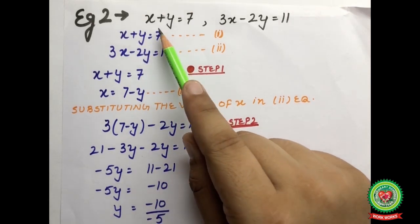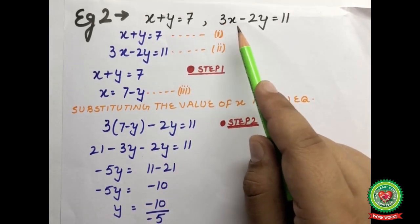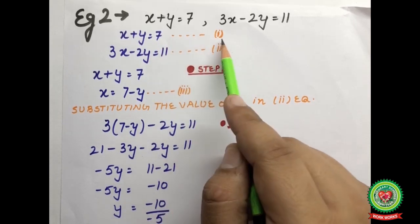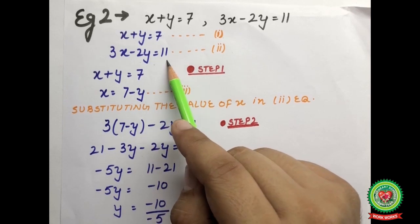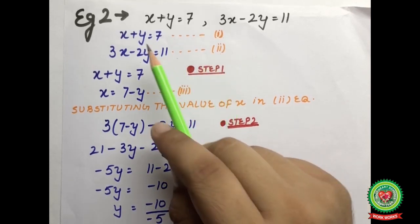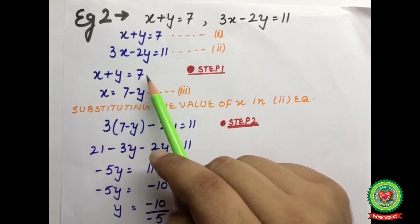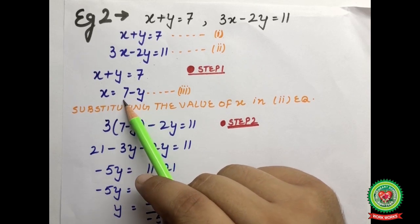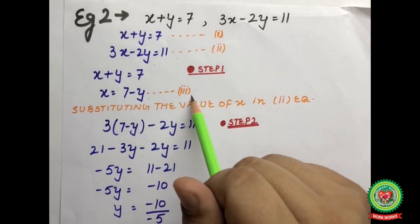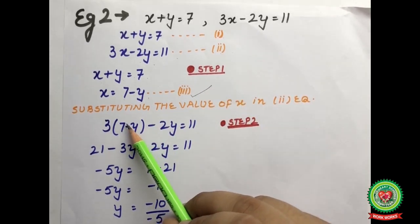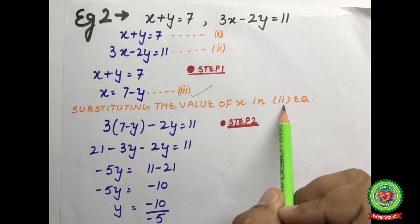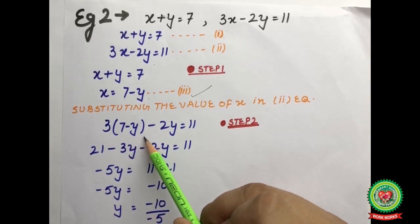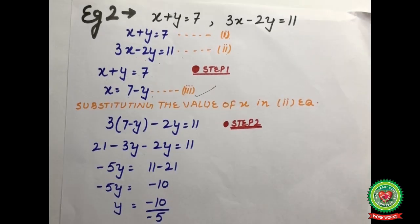Let us discuss one more example for better understanding. Example 2: x plus y equals 7 and 3x minus 2y equals 11. Equation number 1 is x plus y equals 7, and equation number 2 is 3x minus 2y equals 11. From equation number 1, we express x in terms of y: x equals 7 minus y — this is equation number 3. We now substitute this value of x into equation number 2.